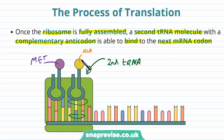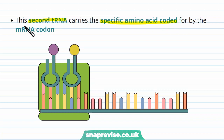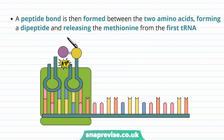This second tRNA carries the specific amino acid coded for by the codon. Each codon is complementary to a specific anticodon, which will only carry a specific type of amino acid. Between the two amino acids, we now need to link them, and the link between two amino acids is called a peptide bond. A protein is made up of lots of amino acids joined by peptide bonds. We form it between the first two amino acids, making a dipeptide. The methionine, which was the first amino acid, can be released from the first tRNA, and the formation of that peptide bond uses energy derived from ATP. The first tRNA is now free to go and do other jobs.